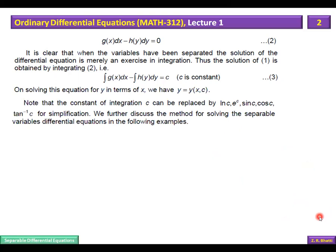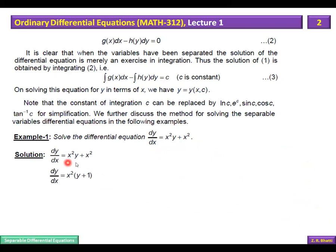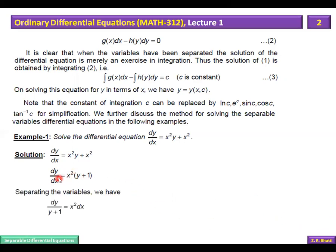To simplify our solution, let's solve an example: dy/dx = x²y + x². We can take x² common from these two terms, making it x²(y+1). So this is g(x) = x², and h(y) = y+1. The variables are now separate. Dividing: dy/(y+1) on the left and x² dx on the right. Now carry out the integration with respect to y on the left-hand side.